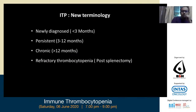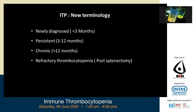Regarding ITP terminology: newly diagnosed ITP is of less than three months' duration. Persistent ITP is 3 to 12 months. Chronic ITP is more than 12 months. Refractory thrombocytopenia is defined post-splenectomy. My topic of interest is newly diagnosed ITP and all its manifestations, which I will address in subsequent slides.